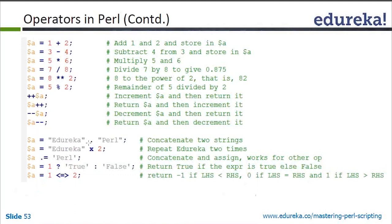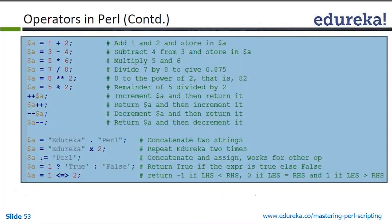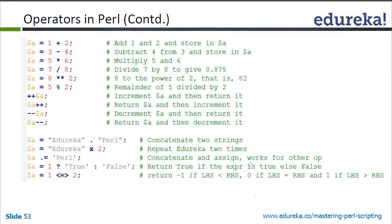If you do 'Eureka x 2', it will print Eureka twice. And 'dollar a .= Perl' means concatenate-and-assign — it concatenates Perl onto A and also assigns the result back, doing two things at once. Whatever the value of A was, you concatenate Perl to it and assign that combined value.